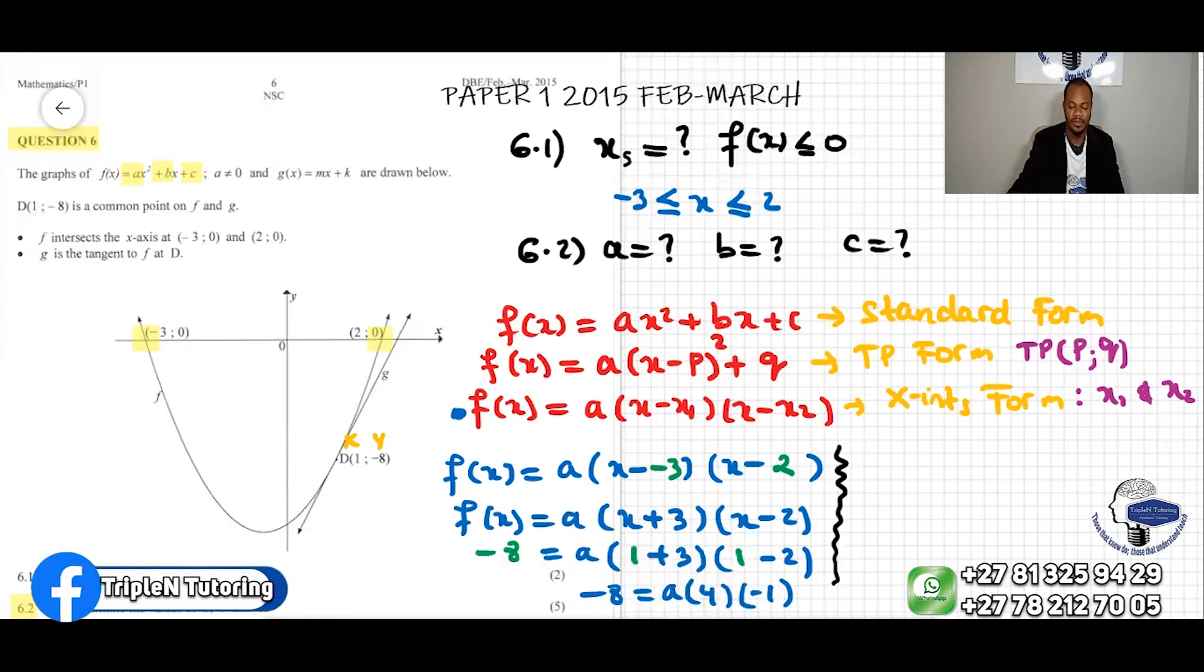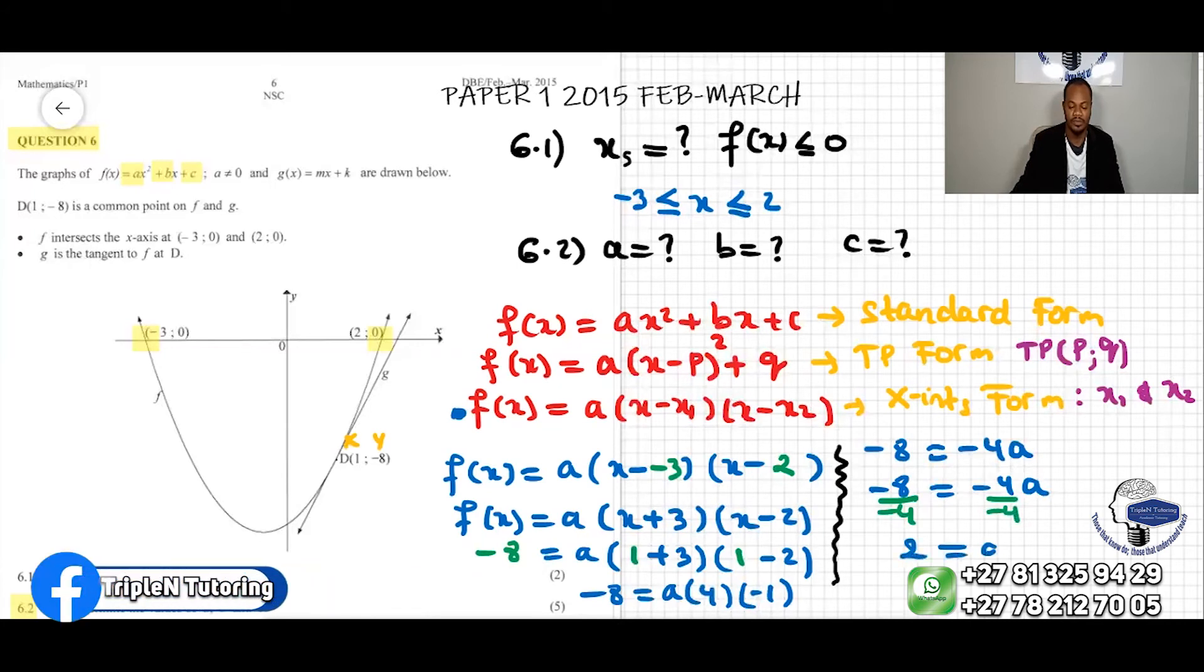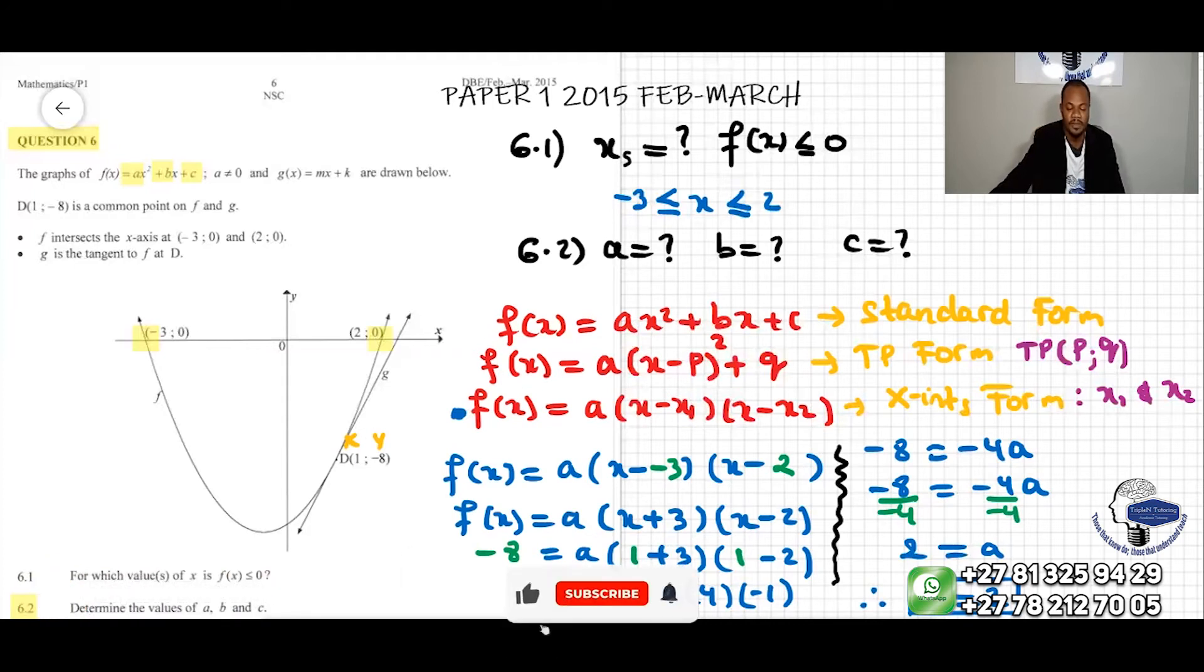That makes -8 equal to -4a. Because I need the value of A, what I can do is divide this equation by -4. And then I got 2. Therefore, A equal to 2. So we got the value of A.